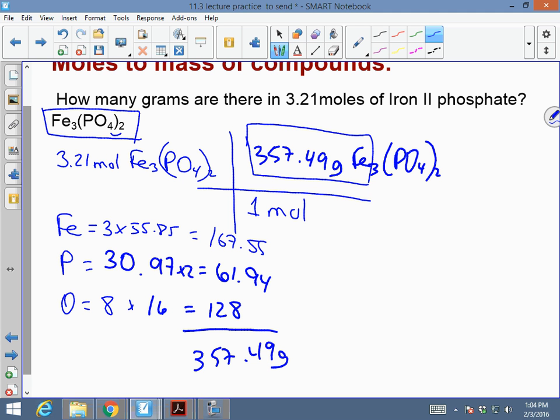Therefore, 357.49 times 3.21, when you multiply that, it gives you a long number. If you see 1147, and that would be grams of Fe3(PO4)2. So this is the moles to mass of Iron II phosphate.